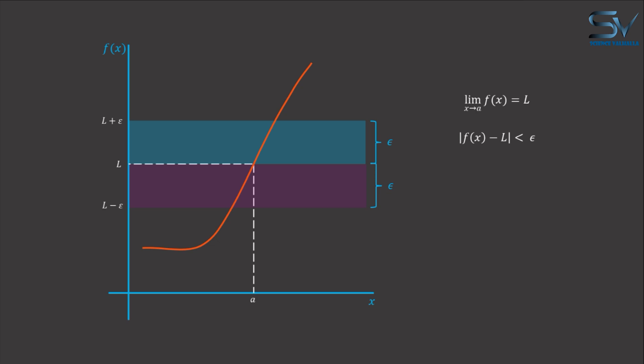How close is close enough? It is sufficient that the distance x minus a from x to a be less than a positive number delta that depends on epsilon. So for every positive number epsilon, there exists a positive number delta depending on epsilon.